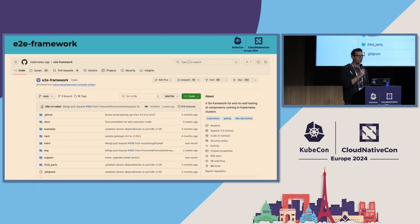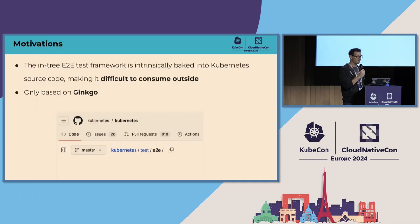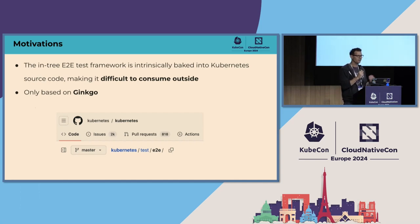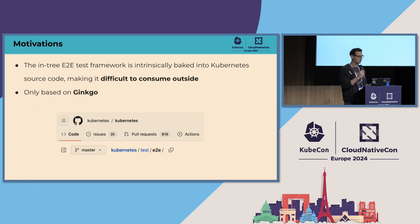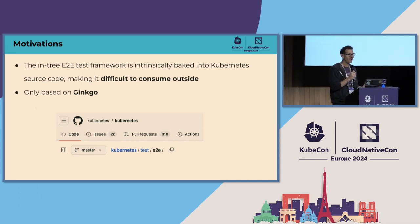It's a Go framework to do end-to-end tests of components running in Kubernetes clusters. Why do we have that? If you go inside the Kubernetes repository, there is already an extensive set of examples and code to do end-to-end tests. The problem with that framework is that it's tightly coupled with Kubernetes itself — designed to test Kubernetes and ensure consistent, reliable behavior of the Kubernetes codebase. It is not designed to be used outside as an external library.